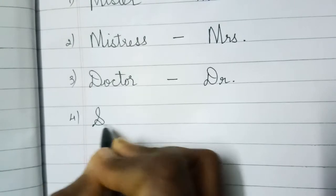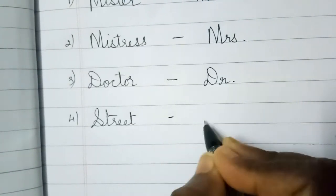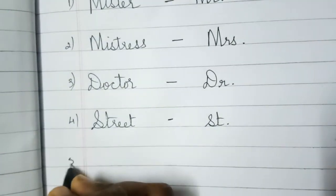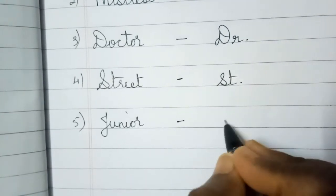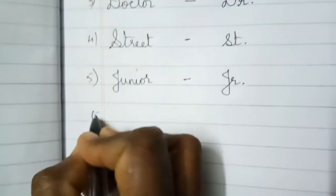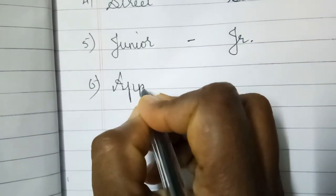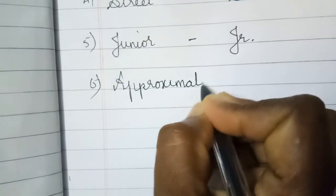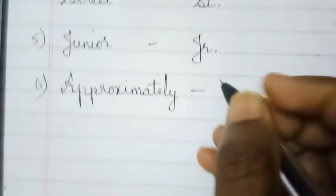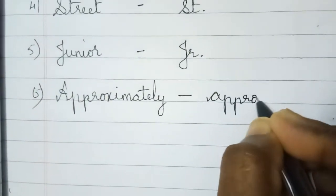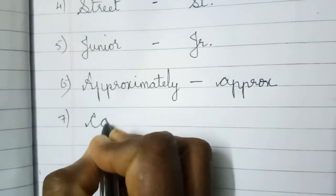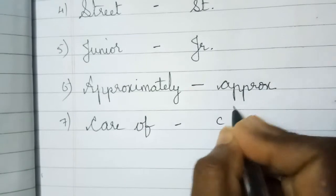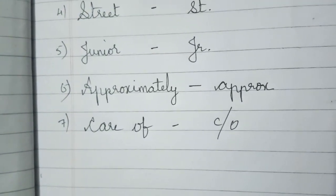Then when we write address and all, we write street. Small s and t with dot. Junior. We write J-R dot. Sixth one, approximately. Now you write A-P-P-R-O-E-X. Approximately. Seventh one, care of. Write C slash O, means care of.